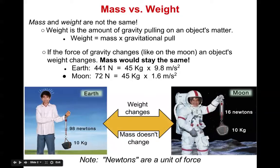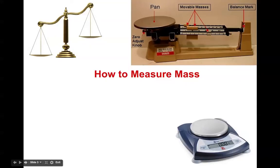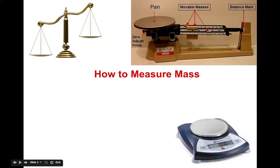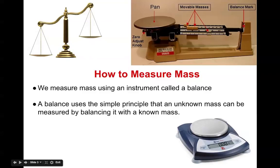Again, the weight changes but mass does not change unless you physically alter the object itself. Newtons are the unit of force, which is what gravity is — a force. We measure mass using an electronic balance, which is based on the principle of an old-fashioned seesaw-type scale: if you have a known mass on one side and place a mass on the other, they'll balance when they're equal.